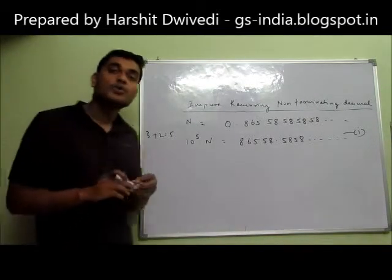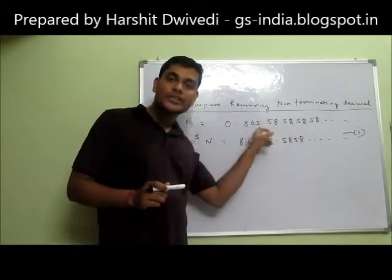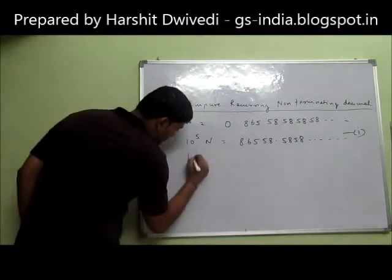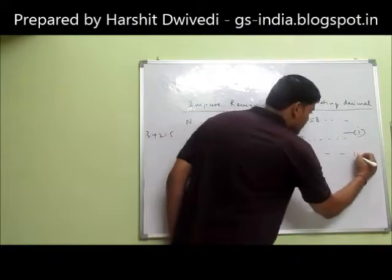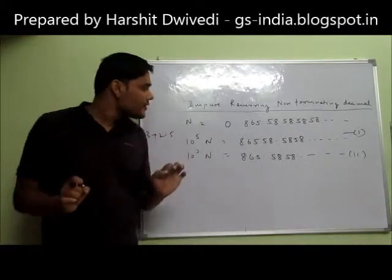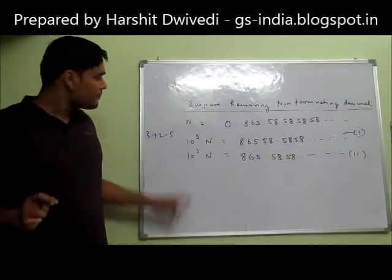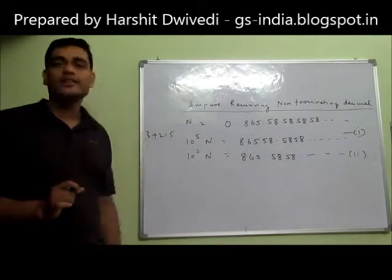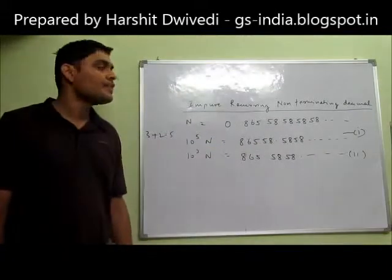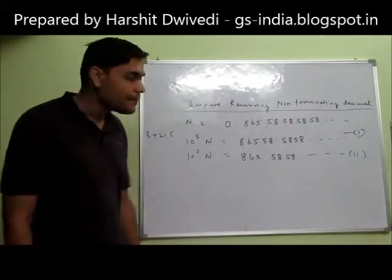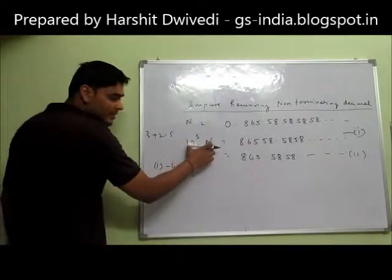In the second case, I will just count those numbers which are not repeated after the decimal — which are 8, 6, 5 — three digits. So I will multiply by 10 to the power 3. So it will be 10 to the power 3 times n equals 865.585858... This is the second equation. Many of you would have got that the purpose is: once I multiplied by 10 to the power 5, and once by 10 to the power 3.